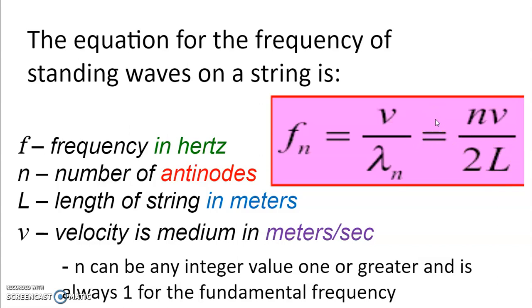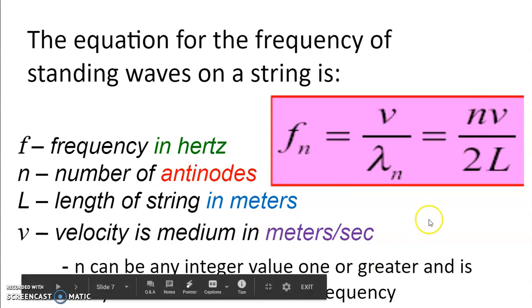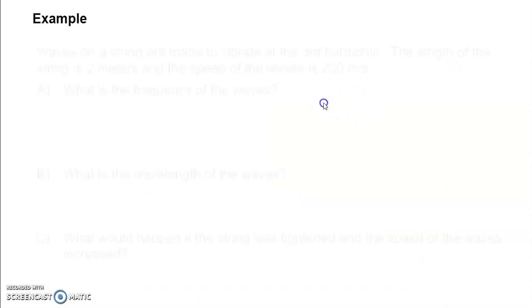When you watch someone tune a guitar, they shorten the string by holding a finger on the fret, and some strings are thicker than others. At the end of the guitar, you can tighten the strings to change the wave speed. For strings, n equals the number of antinodes. On a guitar you're generally playing the first harmonic every time you strum, but for problems you just plug in whatever harmonic number n you're given.